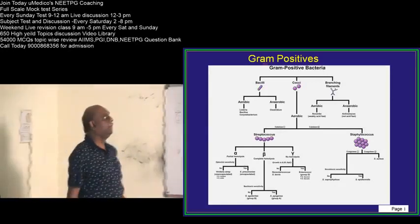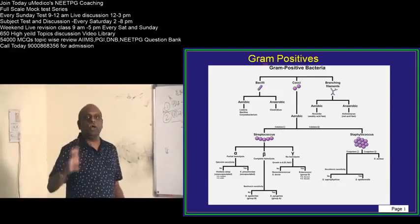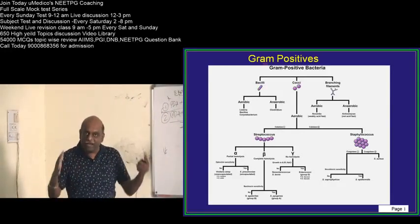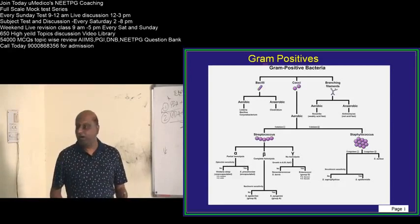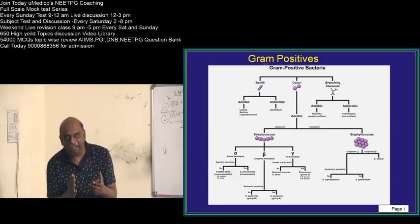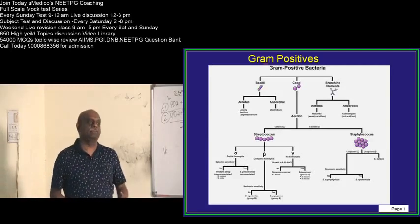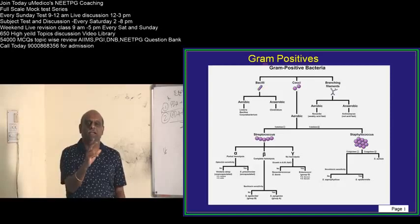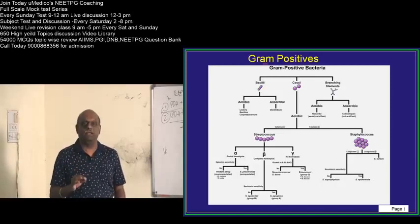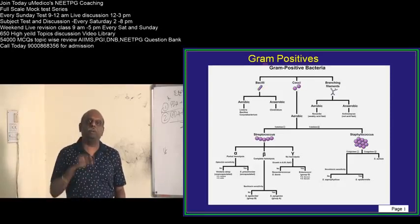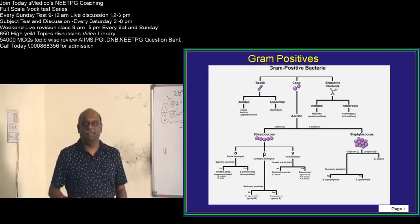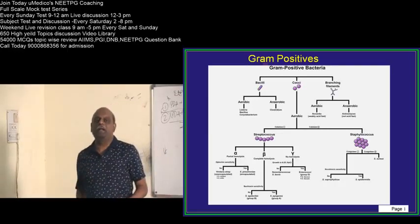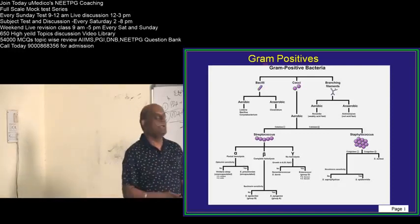So, gram positive organisms, gram negative organisms, how do we classify? What is the differentiating feature among them? Three to four classical bullets about each of these organisms. If you can be able to master in the next one hour, that is best to help I would have done to all of you.